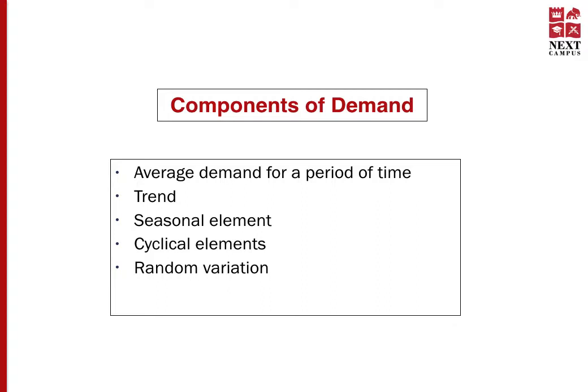The second component is trend — whether demand is increasing or decreasing in a consistent manner. Organizations can apply this trend to future months. The third component is the seasonal element. Seasonality may be seen based on the nature or characteristics of a product. For example, there may be high demand for umbrellas during the rainy season, and organizations can make decisions based on this information as to how many umbrellas need to be produced in the future.